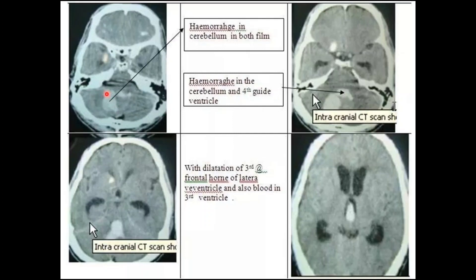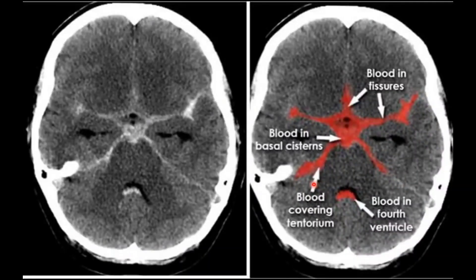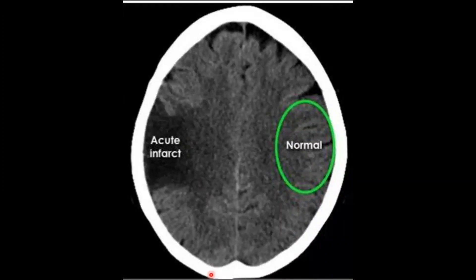Here you can appreciate a right cerebellar hemisphere hematoma with ventricular extension. The dilated temporal horn of the lateral ventricle is visible due to hydrocephalus, and blood is present in the third ventricle. The hematoma is in the cerebellar hemisphere, with blood in the fissures along the prepontine cistern, ambient cistern, and fourth ventricle — a clear example of blood within the fissures.